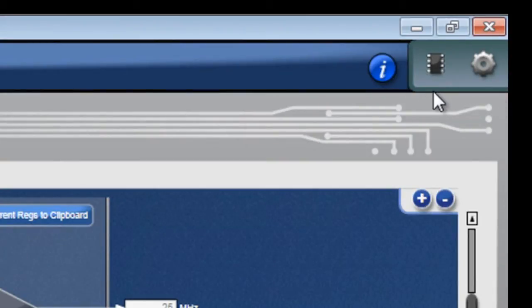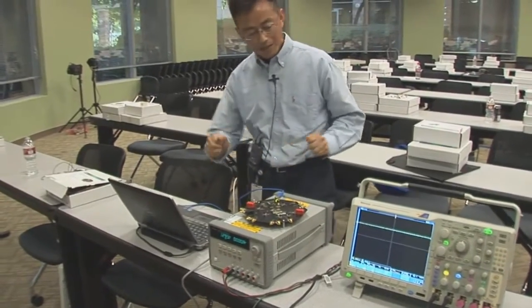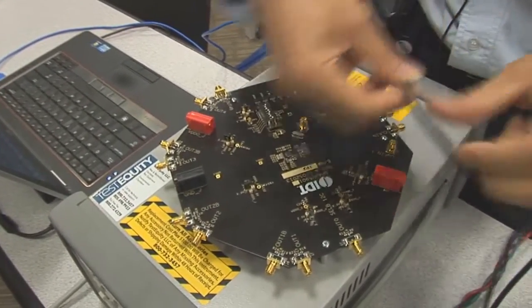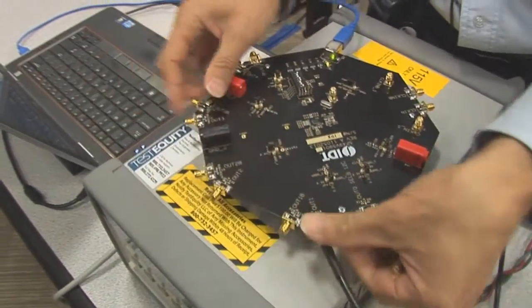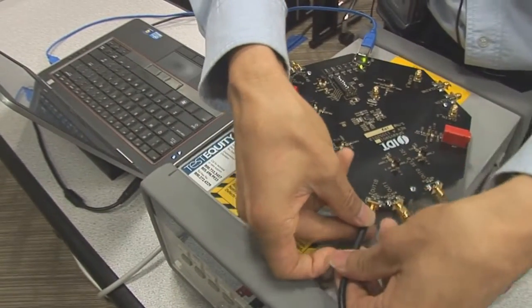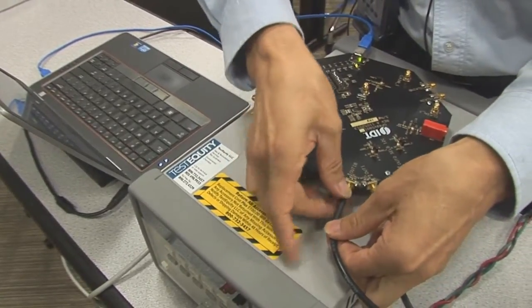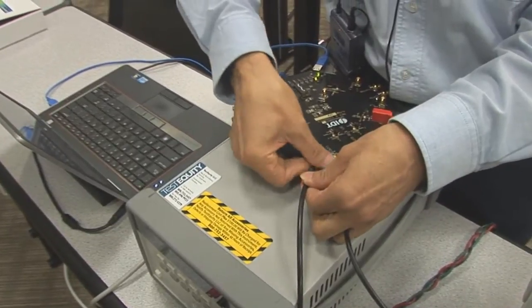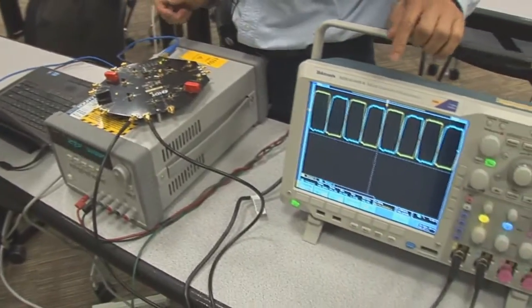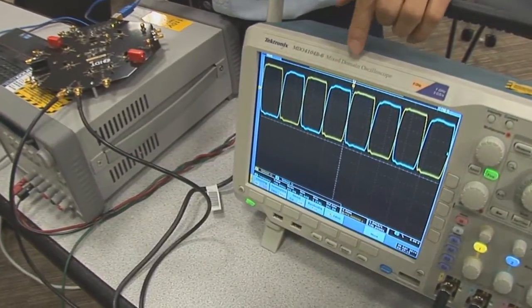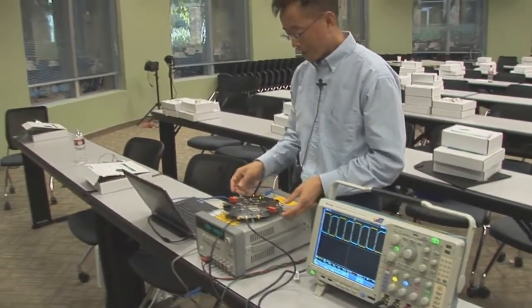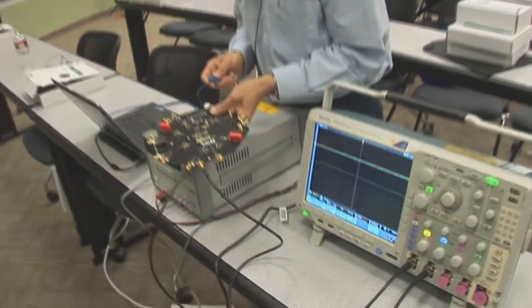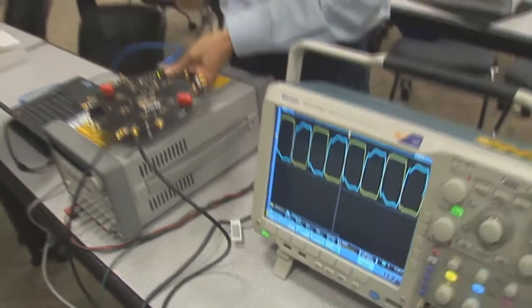But before I do that, I want to show you the default frequency output from the board. Now here is the scope with the SMA connectors, cables. I'm going to connect this to the output 1 of the board. As you can see on the scope screen, there is already 100 MHz LVCMOS differential output already. As you can see, so this is the default output from the chip, output 1 and 1B. As you can see, if I disconnect the power, there is no output. And then when I connect to the power, the output is coming out right away. That's the default output.